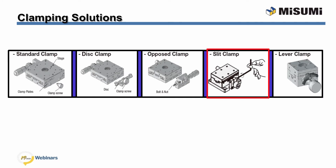With the slit clamp, the feed handle shaft is clamped directly. Compared to conventional models, a larger retaining force can be obtained. For stationary position drifts, the conventional clamp can be used. The lever clamp has a tightening action of a clamp screw and is managed by a lever for easy operation.